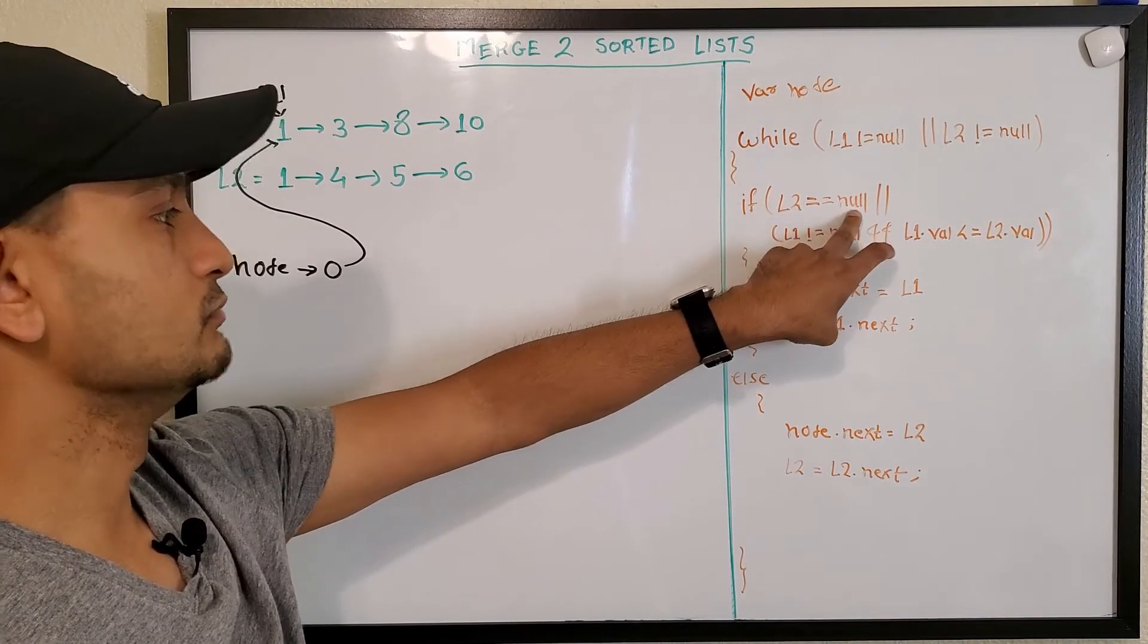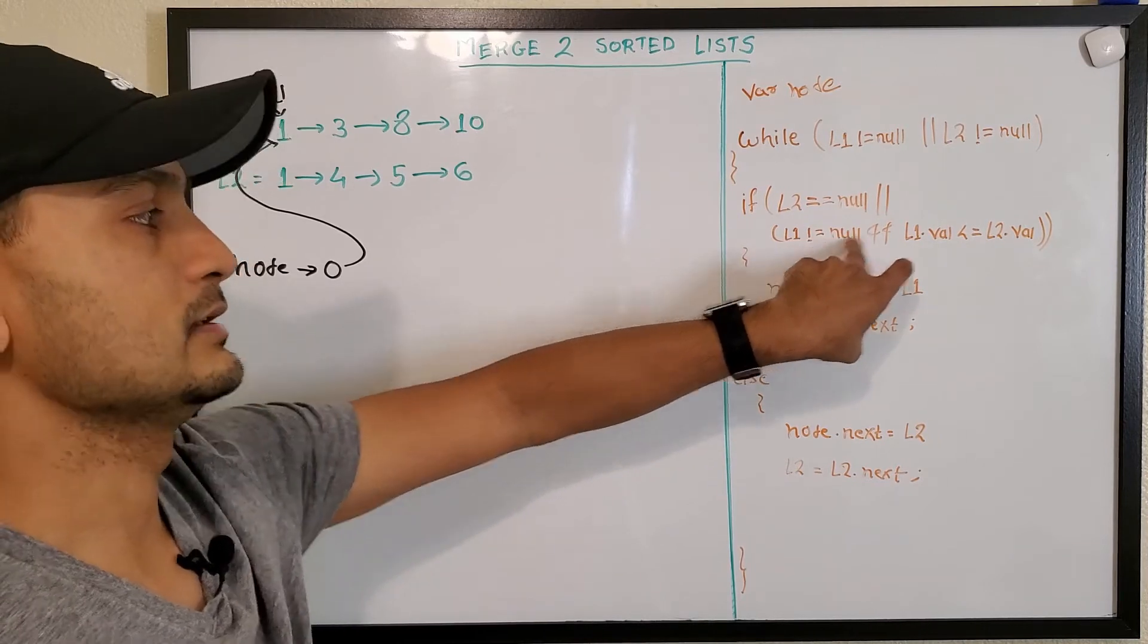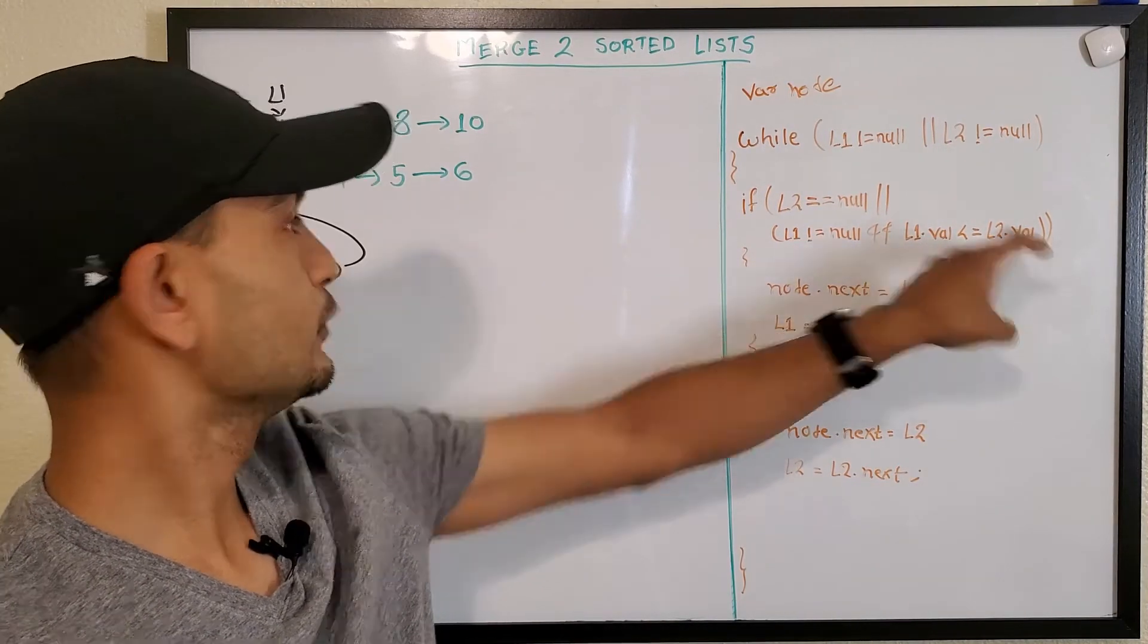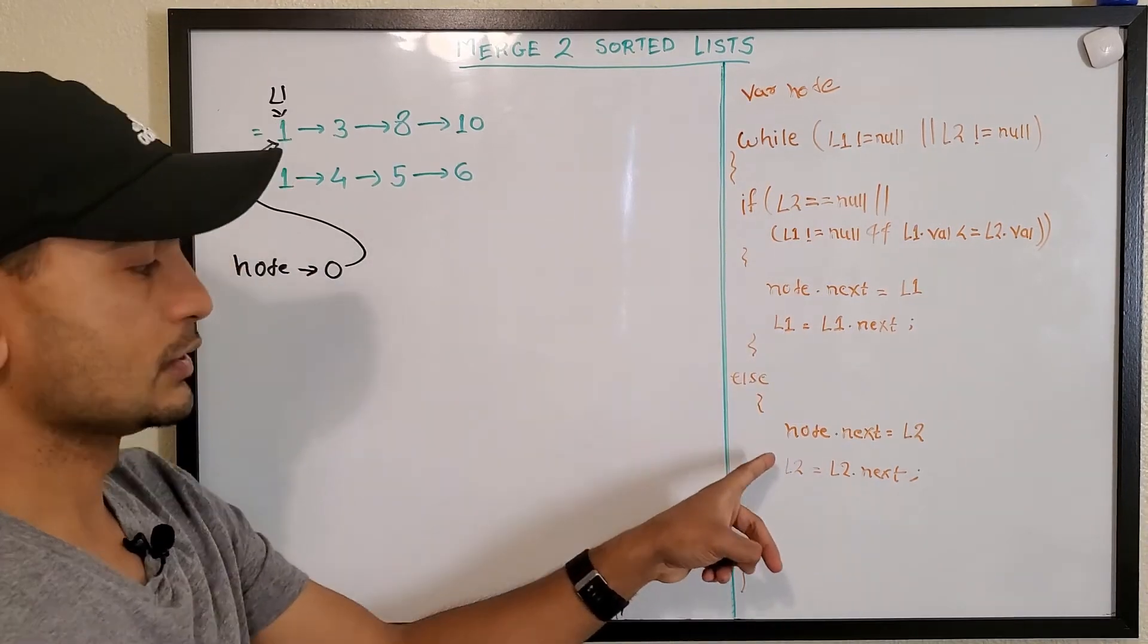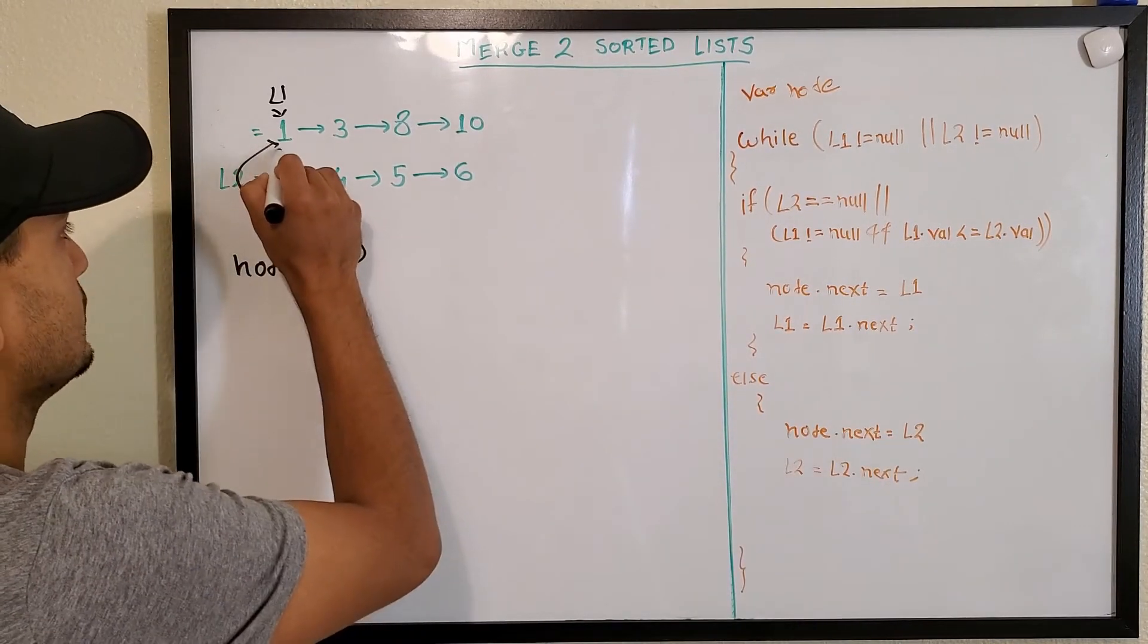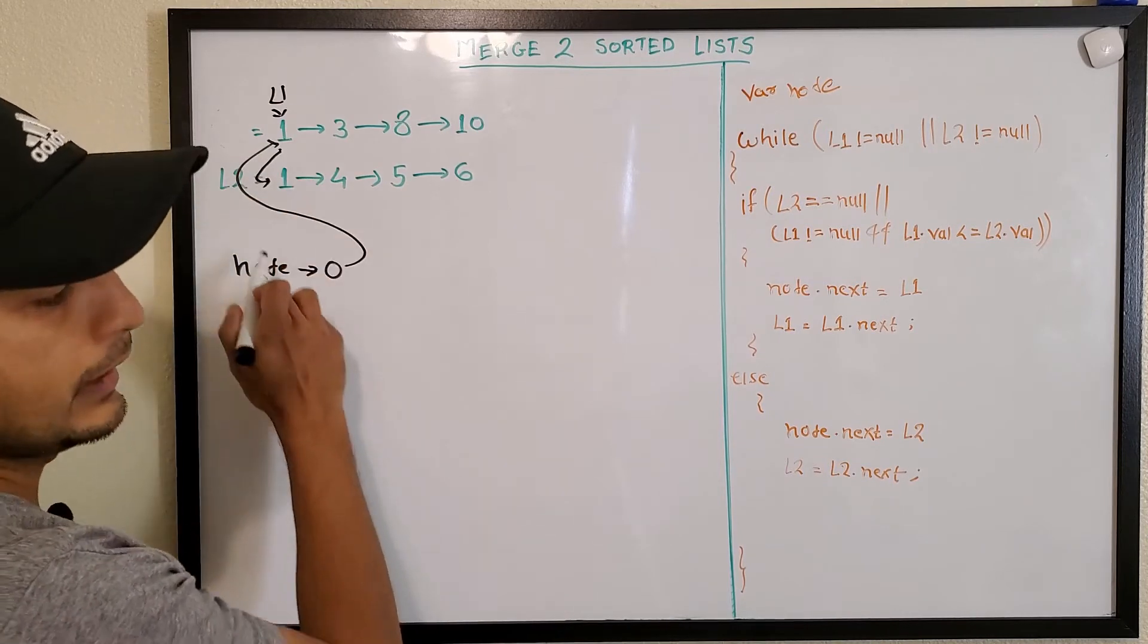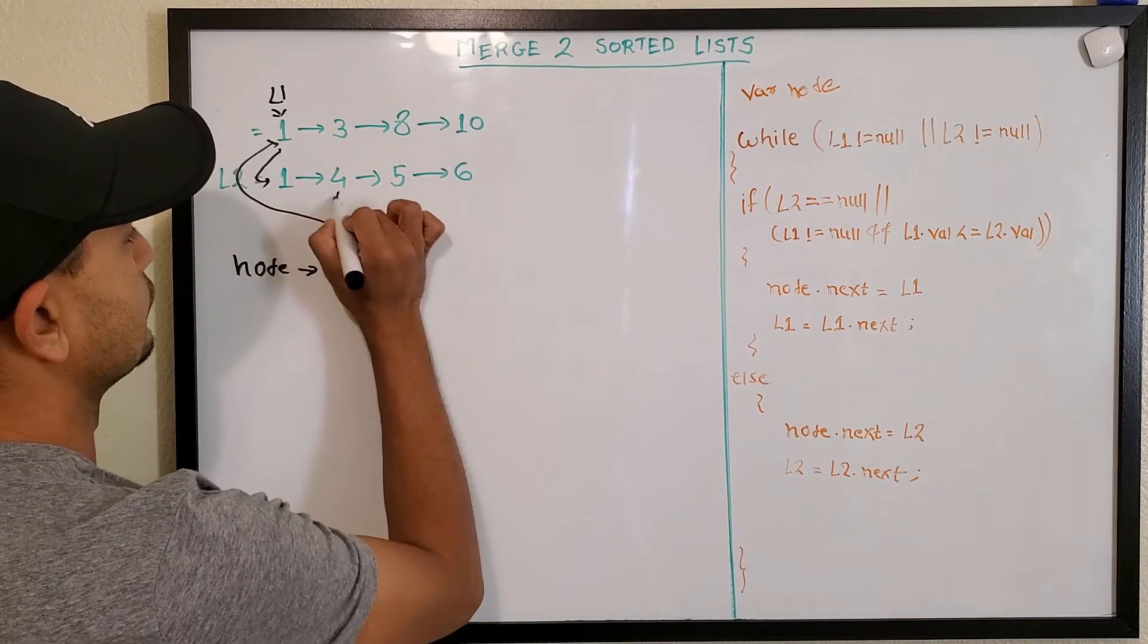Now we come again. L2 is null? No. L1 is not null? Yes. L1 value is less than L2 value? One is less than three? No. So we'll go into else part. Node.next is L2, so next would be L2 here, and L2 moves to next.